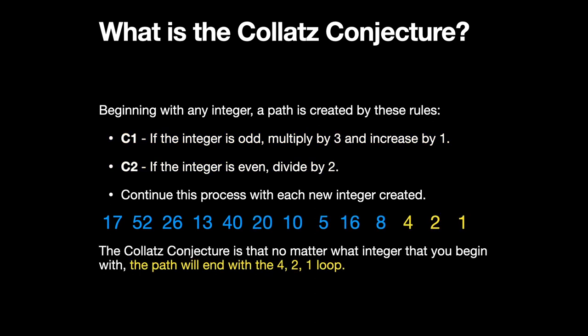The Collatz Conjecture is that no matter what integer you begin with, the path will end with the 4, 2, 1 loop.